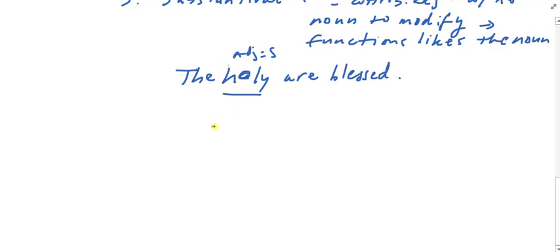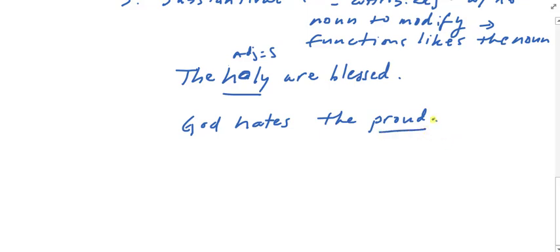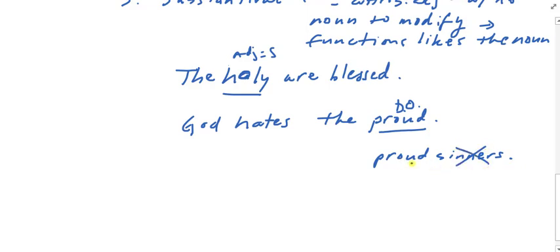I could also have a substantival adjective functioning as a direct object. For example, 'God hates the proud' — here 'the proud' is the adjective functioning as a direct object. If I had an actual noun it would be something like 'the proud sinners' or 'the proud men,' but when I drop the noun and leave just the attributive adjective, it becomes a substantival adjective.